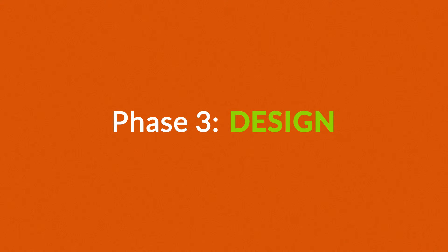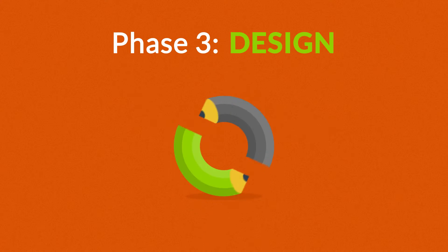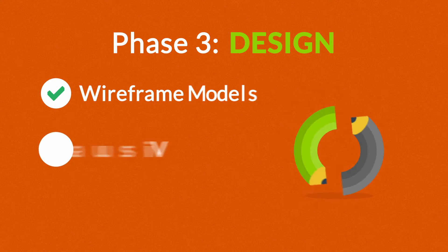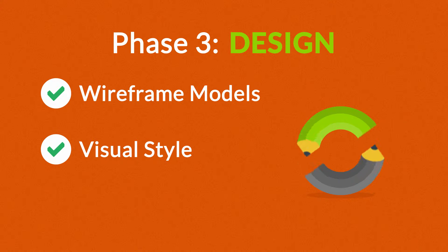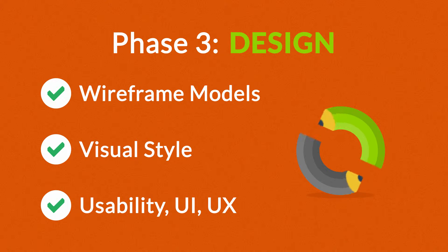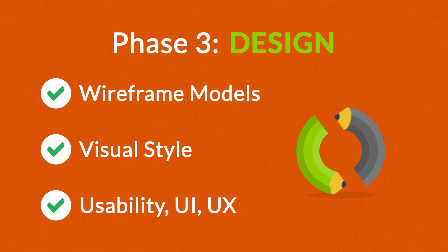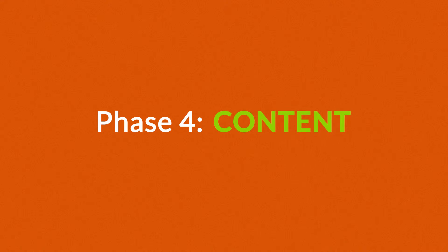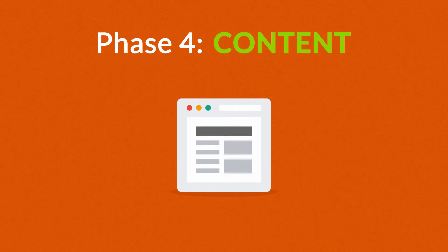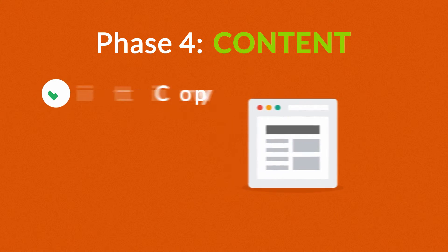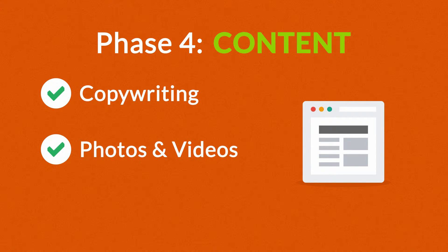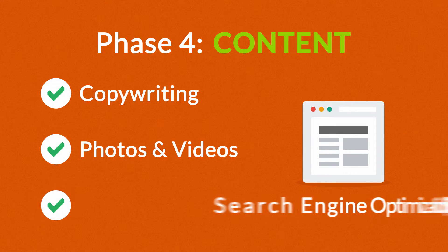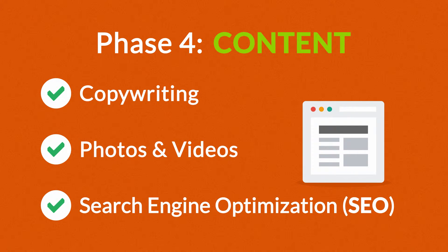Phase 3: Design. Not only do we focus on wireframe models and their visual style in this stage, but also on the usability of the user interface for the best possible user experience. Phase 4: Content. A very important part of the process is choosing the right text, photos, or videos — all optimized not only for your visitors, but also for search engines.